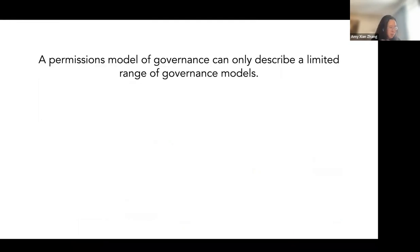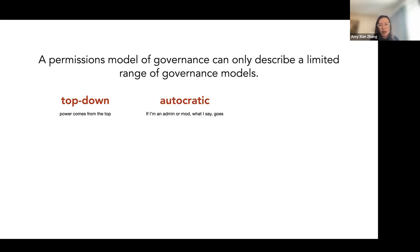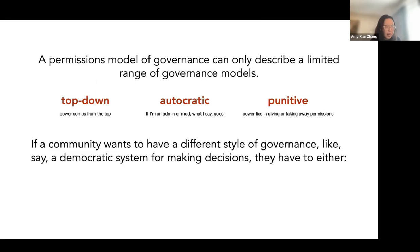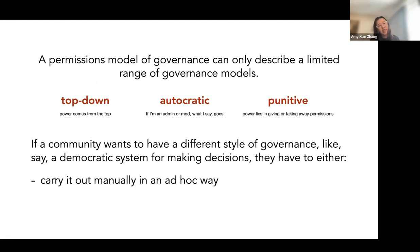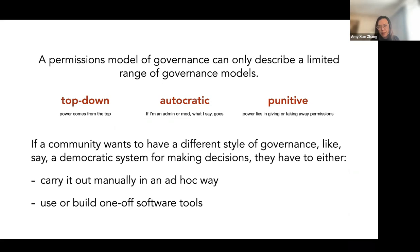A permissions model has its pros — it's very simple and we're all familiar with it — but it also has cons. It can only describe a limited range of governance models. It has a top-down nature where power comes from the top. It's autocratic — if you're a mod or admin, what you say goes. And it's typically punitive, where power lies in giving or taking away particular permissions from other people.